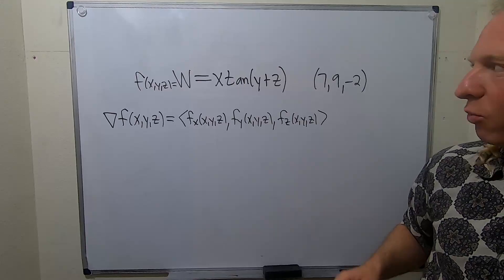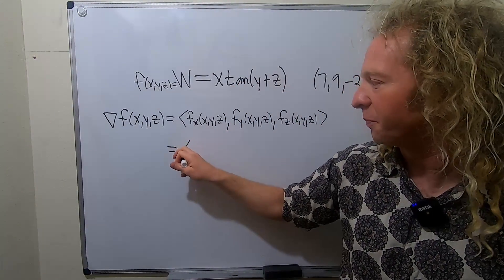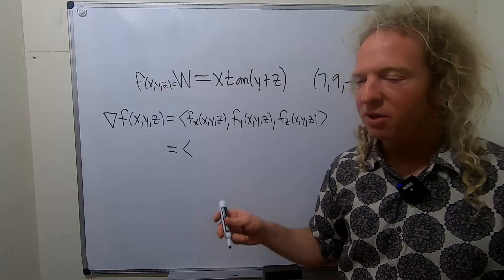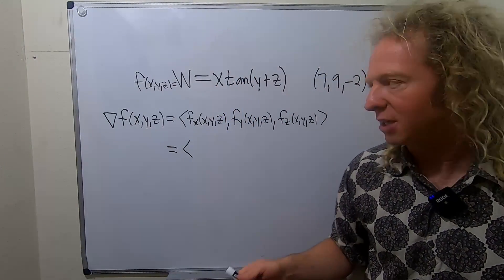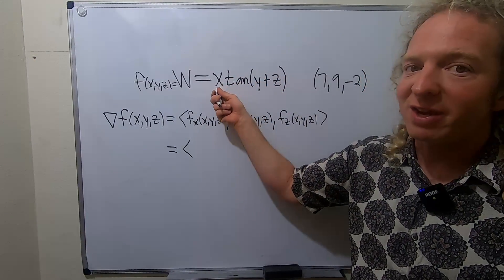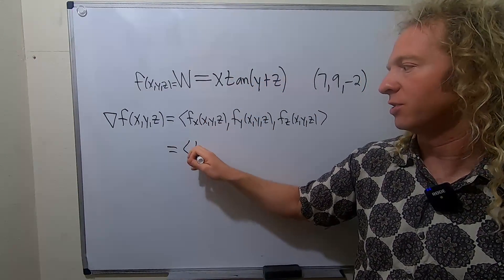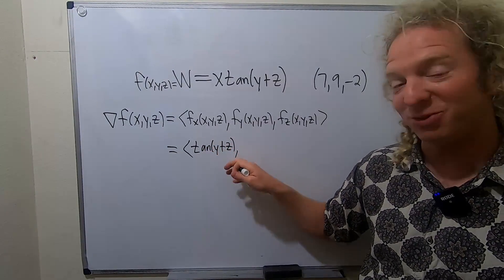So let's go ahead and work through it very carefully. So fx, I think we can actually just fill in the blanks here. Let's take the partial with respect to x. All of this is a constant because it has y's and z's. So the derivative of x is 1, so we're just left with tangent of y plus z. Oh, that was really nice.